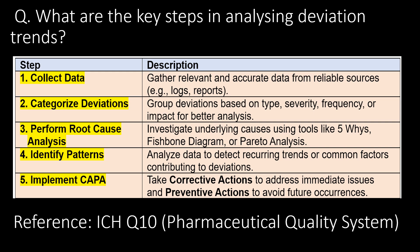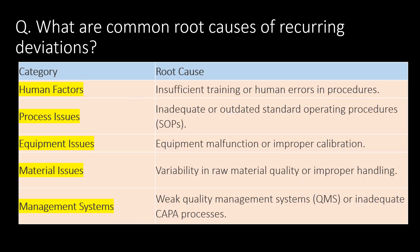Step three — perform root cause analysis: investigate underlying causes using tools like the 5 Whys, fishbone diagram, and Pareto analysis. Step four — identify patterns: analyze data to detect recurring trends or common factors contributing to deviations. Step five — implementation of CAPA: take corrective actions to address immediate issues and preventive actions to avoid future occurrences. Reference: ICH Q10.